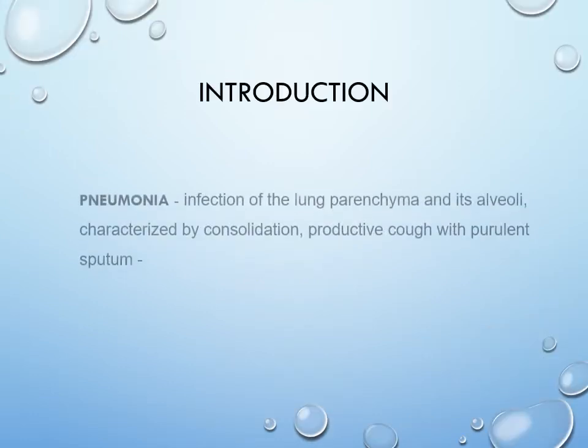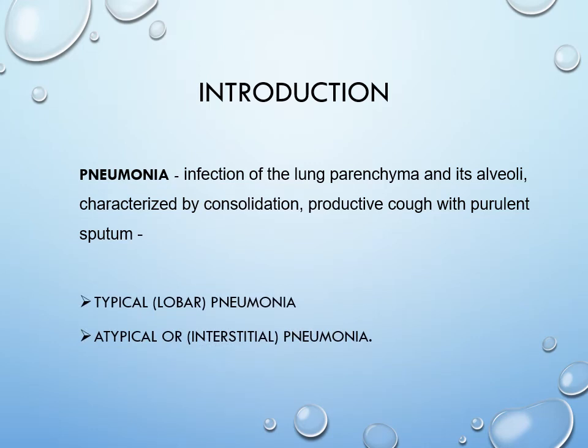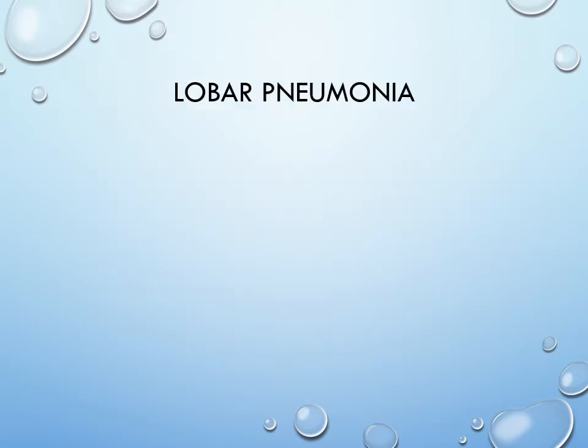So what is pneumonia? Pneumonia is basically the infection of lung parenchyma and its alveoli. It is characterized by consolidation of lungs and productive cough with purulent sputum. Pneumonia can be of two types: typical pneumonia, that is lobar pneumonia, or atypical pneumonia, where it involves the interstitial tissue.